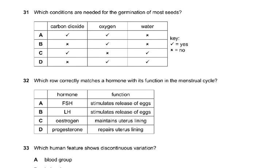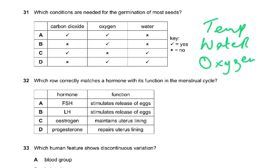Question 31: which conditions are needed for germination of seeds? The answer is D — temperature, water, and oxygen. Carbon dioxide is not needed because the seed does not photosynthesize. Note: moisture is not the correct term, and air is not the answer either, because air contains nitrogen and carbon dioxide — only oxygen from the air is needed.